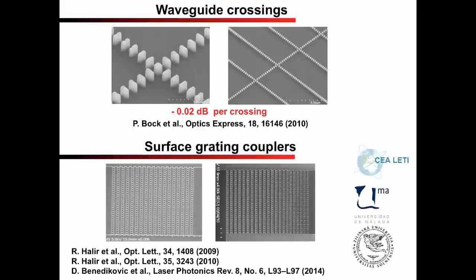Waveguide crossings where we have reached a record low loss of less than 0.02 dB. Surface-grating couplers where subwavelength nano-structure is used to optimize coupling strength and for grating apodization to achieve maximum mode overlap with optical fiber, which is positioned vertically above the chip. In one of these couplers, which we developed in collaboration with the University of Žilina in the Slovak Republic and the University of Malaga in Spain, we recently measured a coupling efficiency of 0.8 dB.